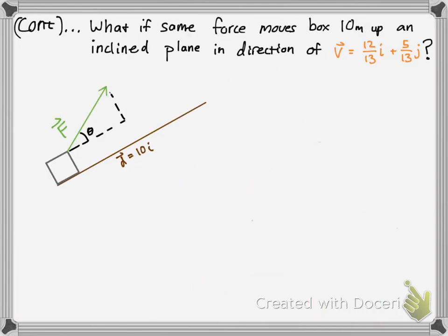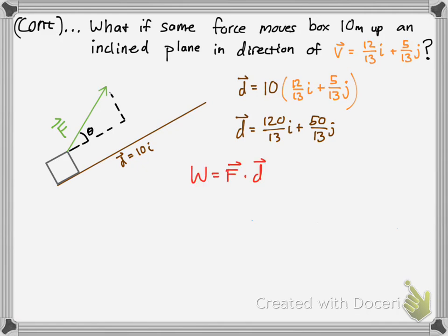What if we did the same thing, but we had the box moving on an inclined plane in this direction? You would simply do the same thing for your distance. Now your magnitude would be 10, and your direction would be your v-vector, which is given. Then you simply distribute and get your distance vector, but now you need the force times the distance to get your work, and we can convert that into vector notation.